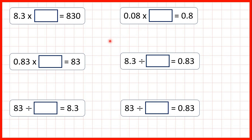That's because when we multiply or divide by 10 or 100, the digits move but they don't change. So first we have 8.3 times what equals 830. The way I like to solve these is to write both numbers one below the other with the place values lined up, and the way we make sure the place values are lined up is to copy down the decimal point.